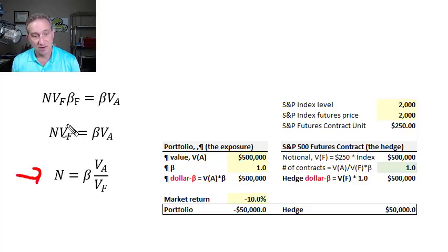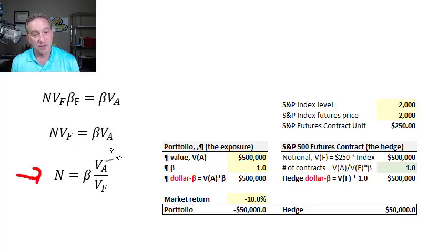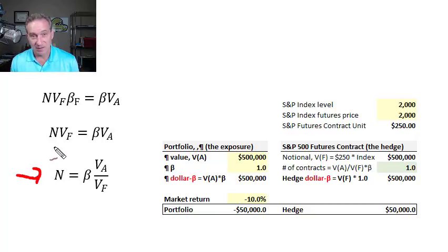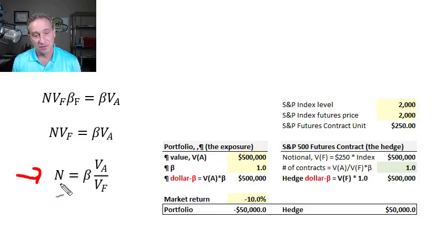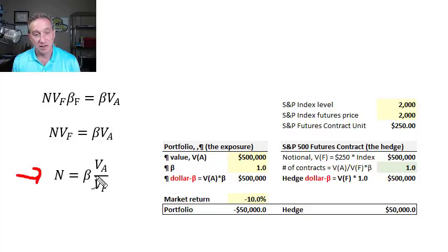The dollar beta of the S&P 500 futures contract is simply the number of contracts multiplied by the notional value per contract. So if we wanted to neutralize the beta of the portfolio — the underlying exposure — we would short the number of contracts such that our dollar beta was exactly offsetting. Solving for N, the number of contracts to neutralize beta is the portfolio's beta multiplied by the ratio of the portfolio value to the notional value of a single futures contract.